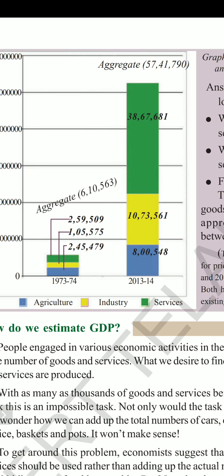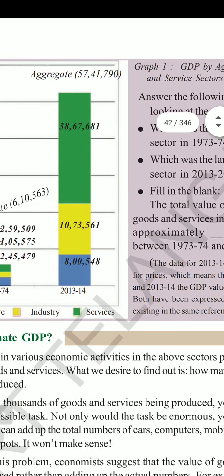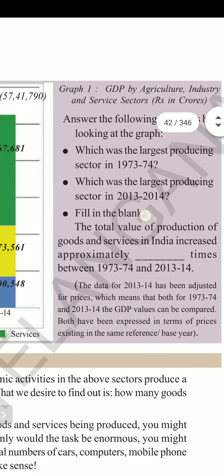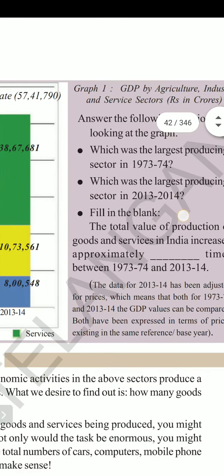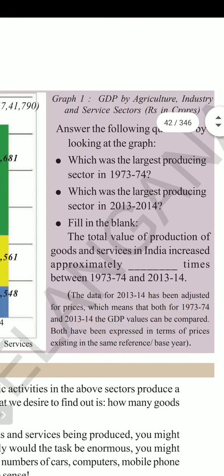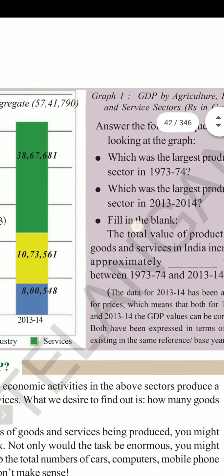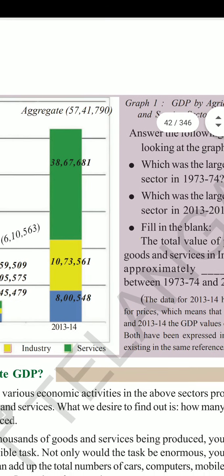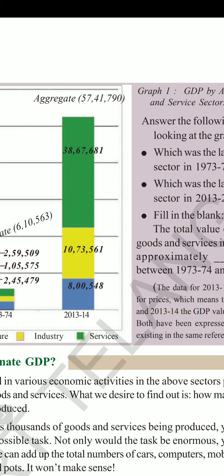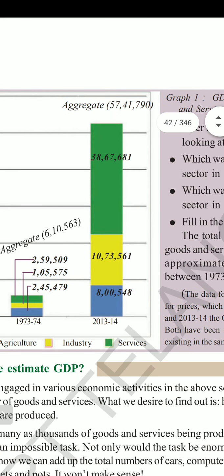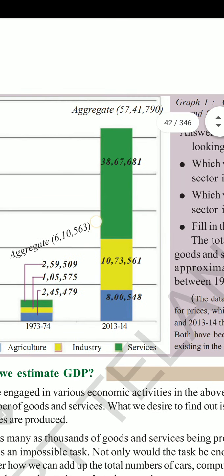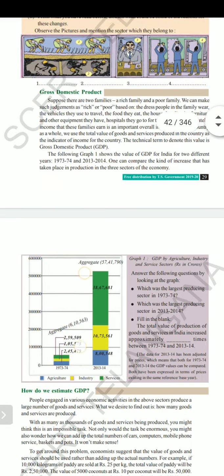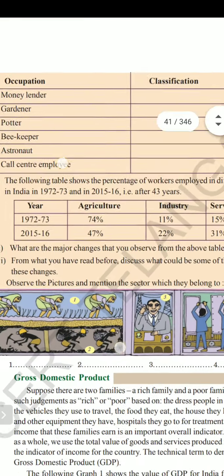Correction: the figures are in crores, not just lakhs — so it is eight lakh crores, not just eight lakh. There is a connection between this GDP graph and the previous employment table.